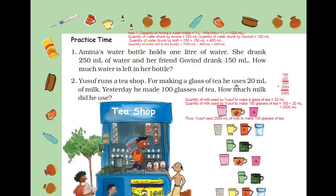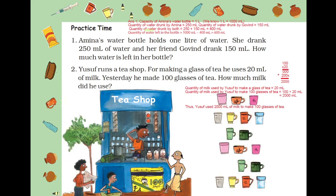Quantity of milk used by Yusuf to make one glass of tea is already given in the question — it is 20 ml. Quantity of milk used by Yusuf to make 100 glasses of tea: you have to do multiplication. So, 100 times 20 equals 2000 ml. Or you can also write 2 liters. Thus, Yusuf used 2000 ml of milk to make 100 glasses of tea.